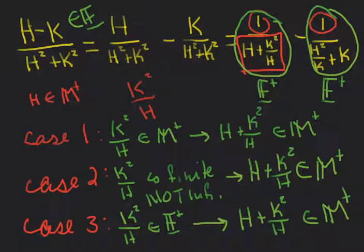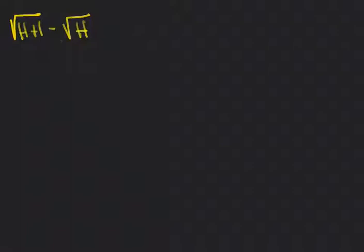That was a challenging one — it definitely required analyzing all three cases. Let's do a couple more. How about another indeterminate form: the square root of h plus 1 minus the square root of h. This is an infinite number minus an infinite number, so this is again an indeterminate form.